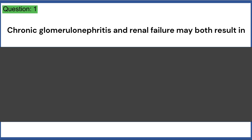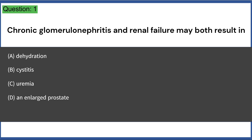Chronic glomerulonephritis and renal failure may both result in: A. Dehydration, B. Cystitis, C. Uremia, D. An enlarged prostate, E. Hirschsprung's disease. Answer: C.